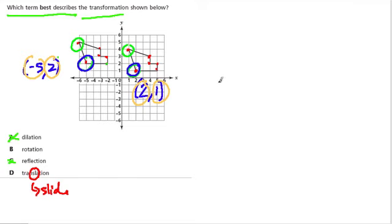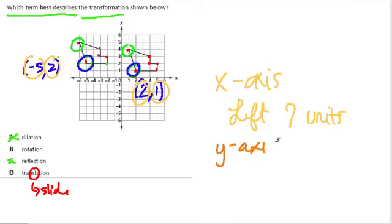Okay, so on the x-axis, that point went to the left 7 units. On the y-axis, we went up 1 unit.